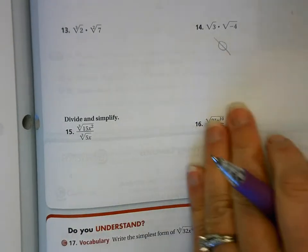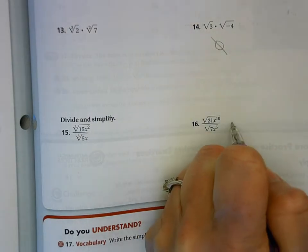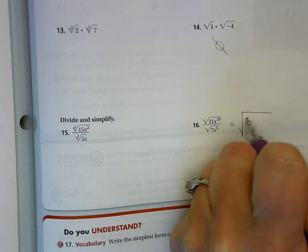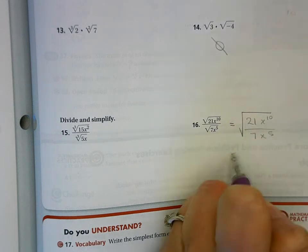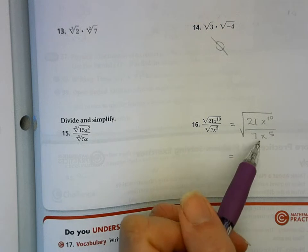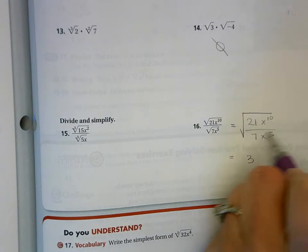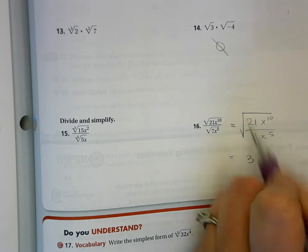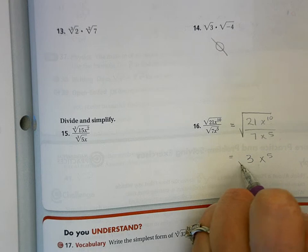Now let's take a look at number 16. I'm going to rewrite it as a single fraction first, then divide. So 21 divided by 7 is 3. I have x to the 10th being multiplied and x to the 5th being multiplied, so this reduces — 5 away from here, so 10 minus 5 is 5, still under the radical.